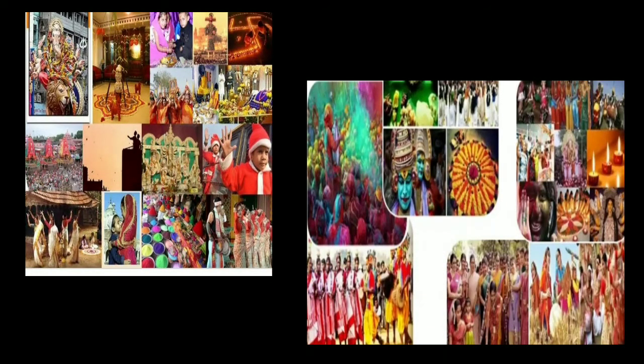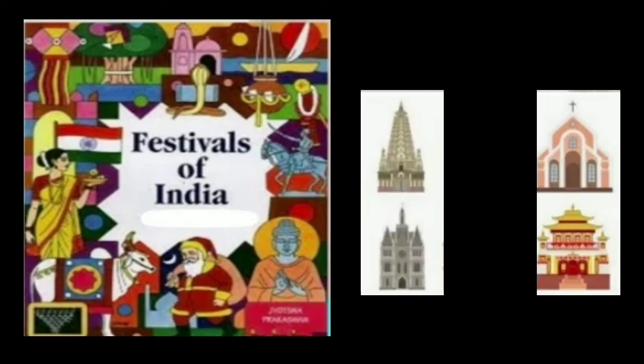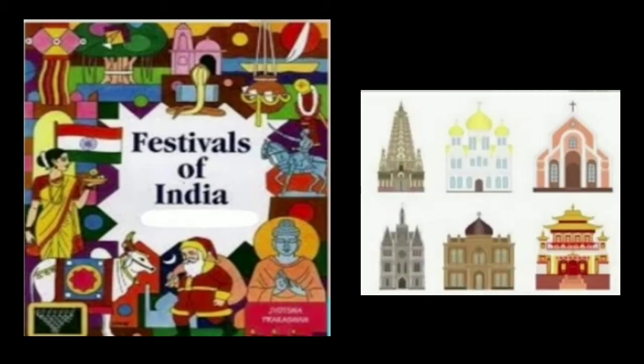Then we have diversity in custom and tradition — different people have different customs and traditions according to their religion, according to their faith. Some are celebrating festivals in different ways. There are lots of festivals we celebrate in India, and we celebrate all festivals together. And we have different modes of worship. Some people are worshipping — worshipping means puja karna, ibadat karna — in mosque or mandir. So we have a different mode of worshipping, and people have different religions and they worship according to their religion.